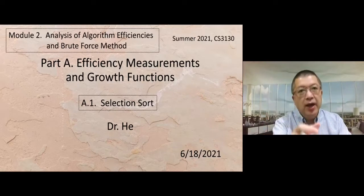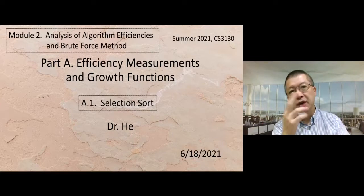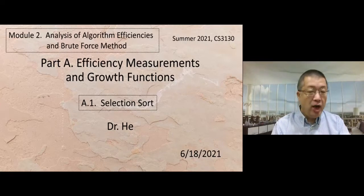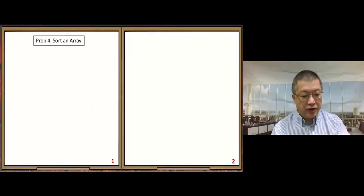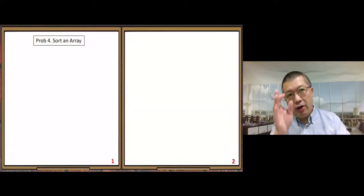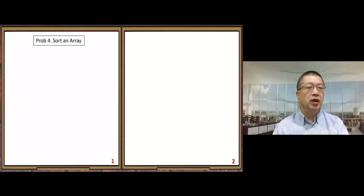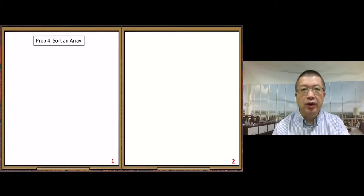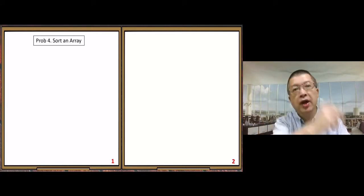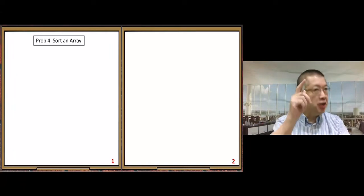Part A, Efficiency Measurements and Growth Functions. Two concepts. Section 8.1, Selection Sort. First, let's start with our problem number four: sort an array. In this class, we will learn several sorting algorithms. So this is the first one, Selection Sort.